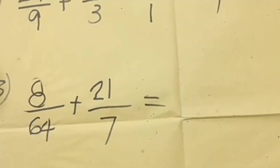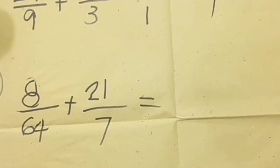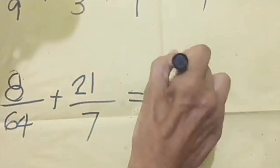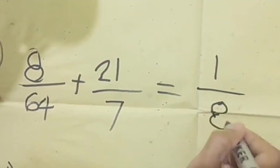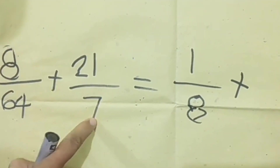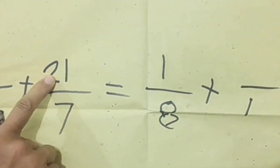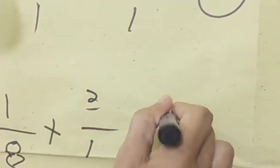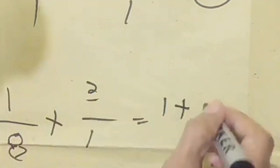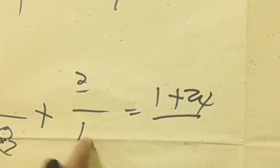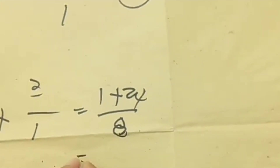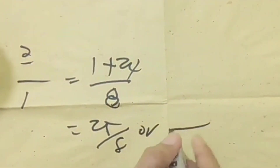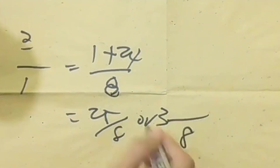Number three: 8/64 plus 21/7. For 8/64, reduce by dividing by 8: 8 divided by 8 equals 1, 64 divided by 8 equals 8, giving 1/8. For 21/7, divide by 7: 7 divided by 7 equals 1, 21 divided by 7 equals 3, giving 3/1. Then cross multiply: 1 times 1 equals 1, plus 8 times 3 equals 24. The denominator is 8 times 1 equals 8. Adding 1 plus 24 equals 25, so the answer is 25/8 or 3 and 1/8.